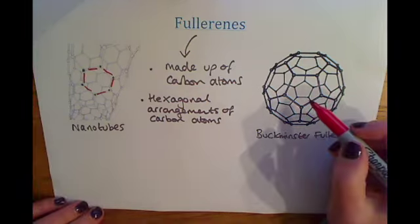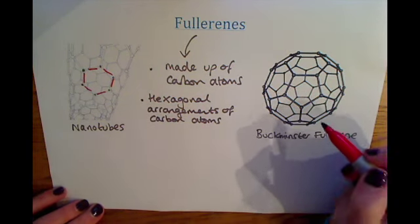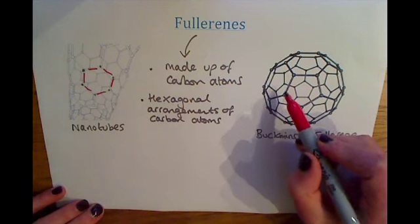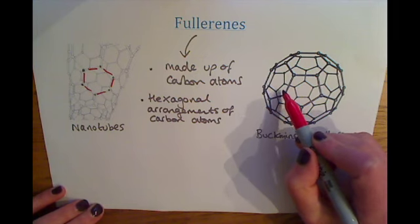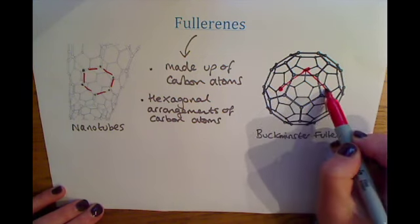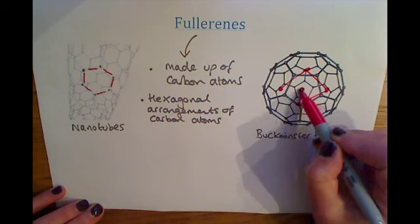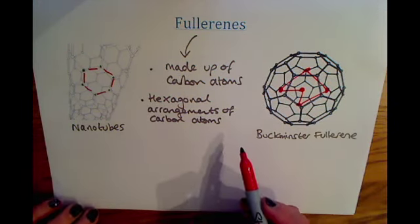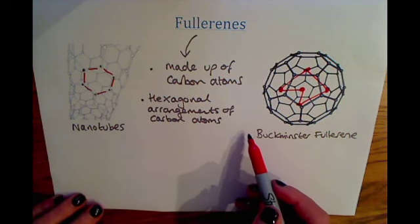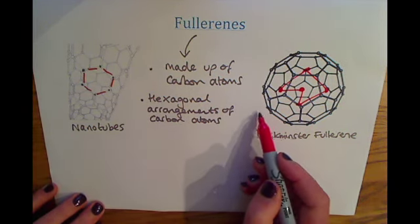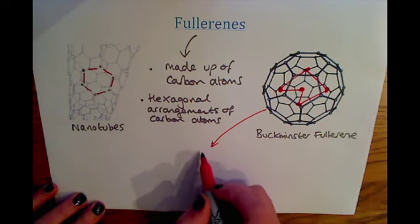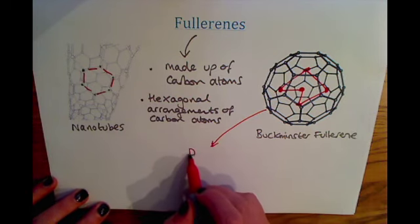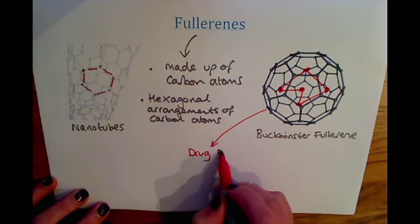The Buckminster fullerene and nanotubes can be used for drug delivery in the body. For example, if you were to put a drug inside the tube, the Buckminster fullerene would allow that drug to be delivered to a specific place in your body. So one of the useful applications is targeted drug delivery into the body.